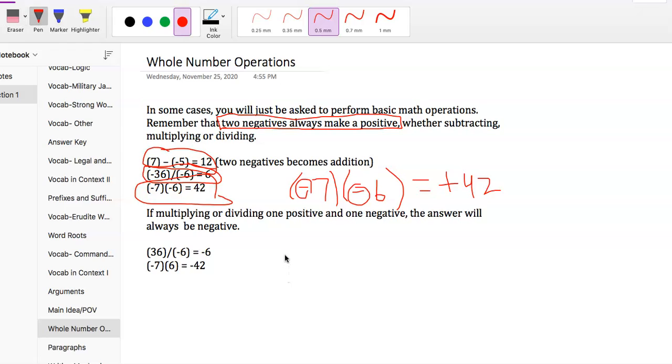We have two others here. This one says 36 divided by negative 6. Here, the 36 is a positive - it doesn't say that, but just 36 is positive 36. So we have one positive and one negative. When we're looking at that, it means our answer is going to be negative. 36 divided by 6 is 6, which gives us an answer of negative 6.